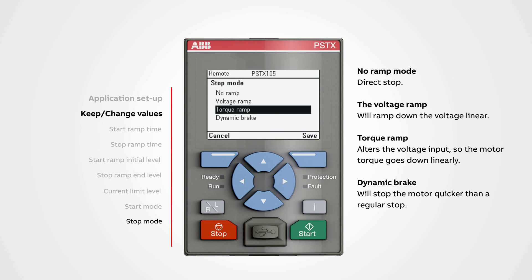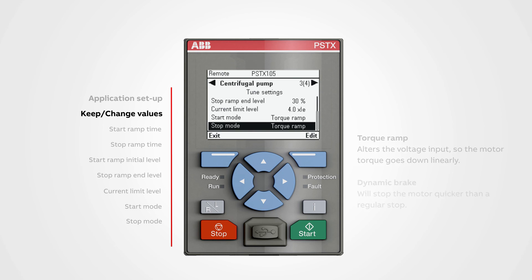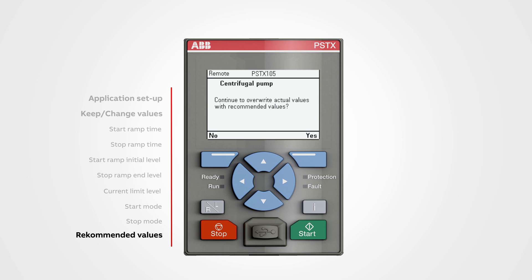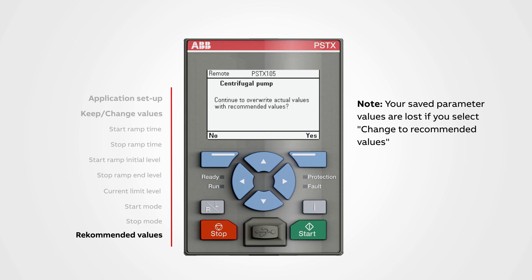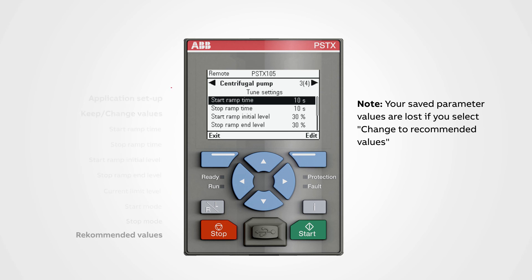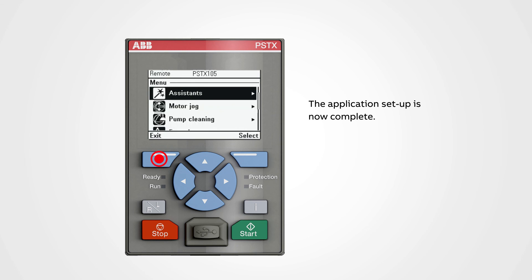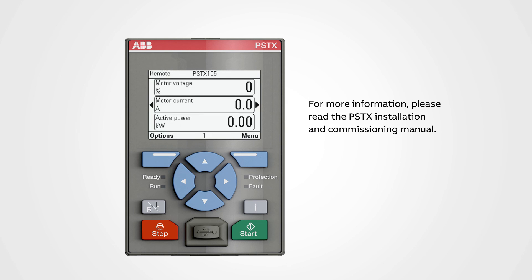Change to recommended values: replace all settings with recommended settings for the centrifugal pump. Push yes to save the recommended settings. Note that your saved parameter values are lost if you select change to recommended values. The application setup is now complete. Return to the home screen with the top left button. For more information, please read the PSTX installation and commissioning manual.